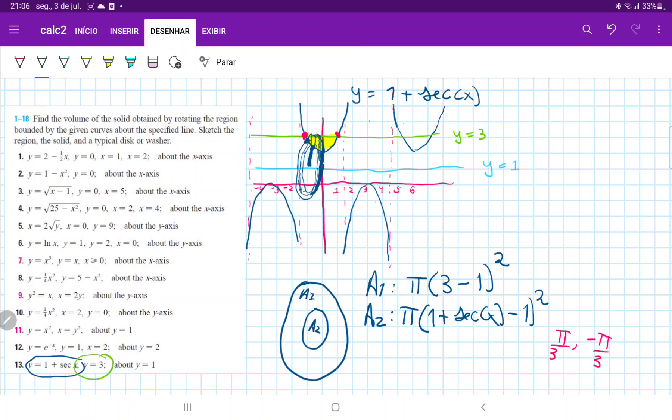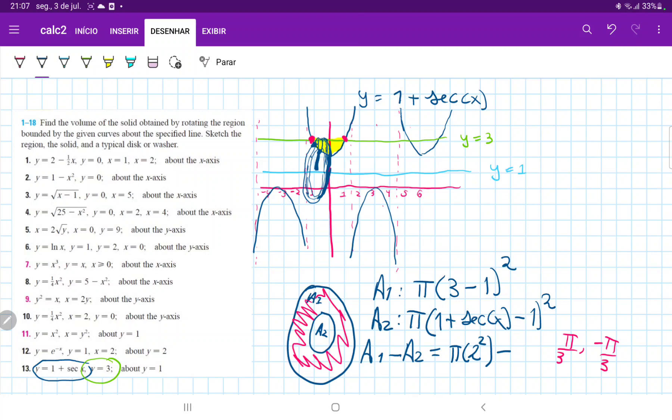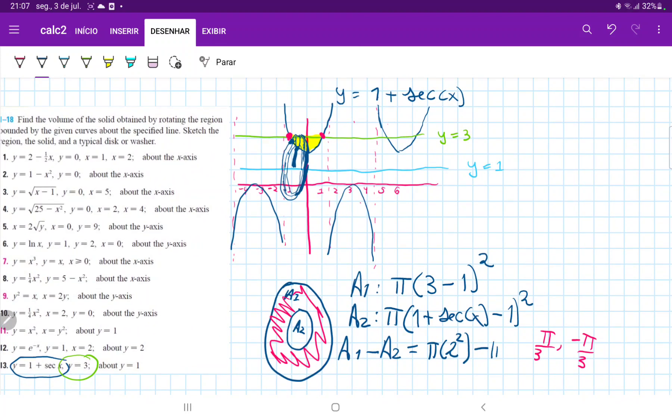So we have an expression for A1 and A2. And now, basically, the ring is just A1 minus A2, which is this outer part here. So we have here that A1 minus A2 is equal to, let's see, 3 minus 1 is 2. So we have pi times 2 squared minus, and this is pi times 1 plus secant x minus 1. So it's just secant x squared, minus pi times secant x squared. So basically, A1 minus A2 is equal to pi times 4 minus secant squared of x.